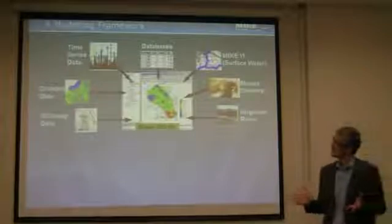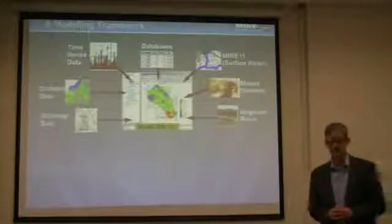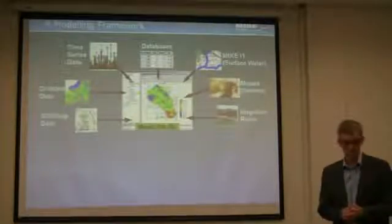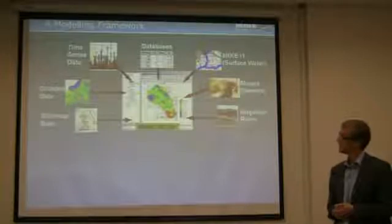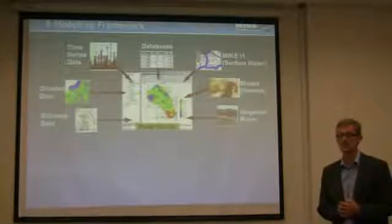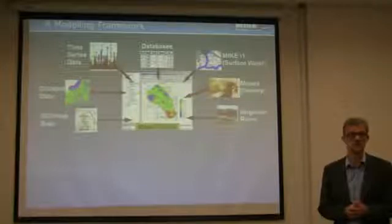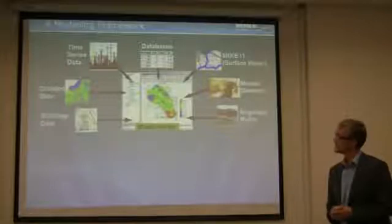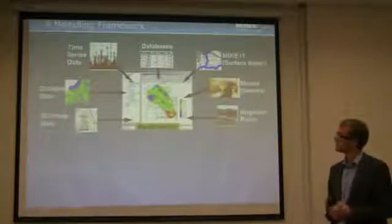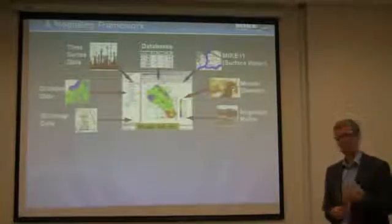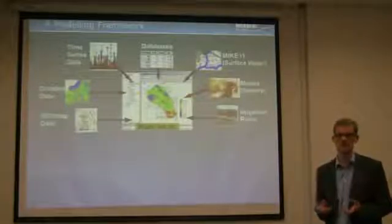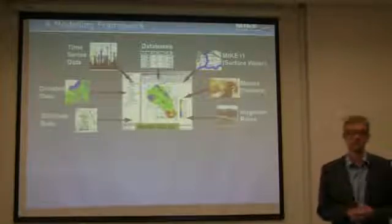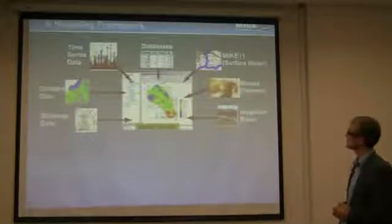We say it's a modeling framework. It contains, or it needs, different types of data. You can supply GIS data, map data of different kinds, gridded data - spatial distributed data that is required to implement parameter descriptions in MIKE SHE. Time series for all the parameters that go into the modeling framework, and linkup with databases.